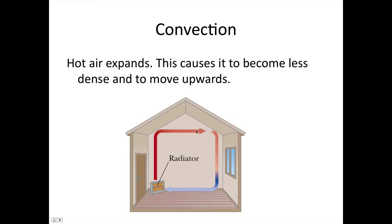As it is in thermal contact with the surrounding air, as it undergoes this path, it will lose some energy. So it will become cold again by the time it gets back to the radiator. That's how we get convection currents formed.